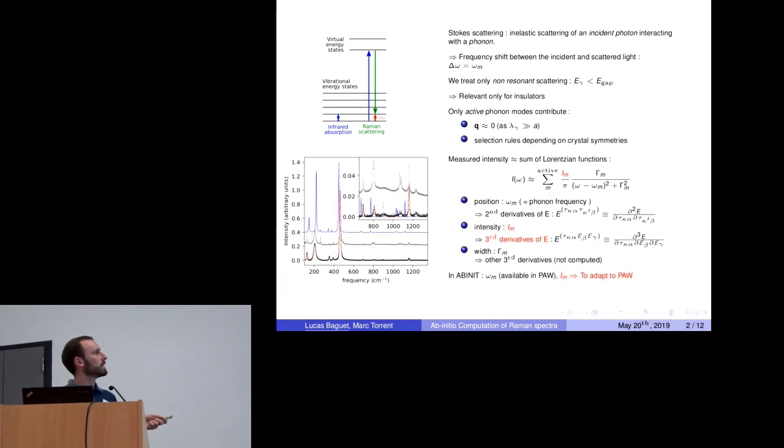The position equals exactly the phonon frequency of the mode involved in the scattering process and can be computed from second derivatives of the energy with respect to two atomic displacements. The intensity, which is the subject of this work, is computed from third derivatives of the energy with respect to one atomic displacement and two electric fields. The widths are more complex to compute and involve other third derivatives and are not implemented yet in Abinit.